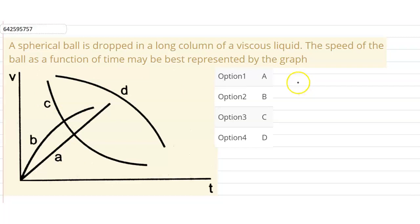When the ball falls in the long column of viscous liquid, it starts with the velocity of zero and with some acceleration, let us suppose as 'a'. But as the time passes, the acceleration decreases due to the viscous force.